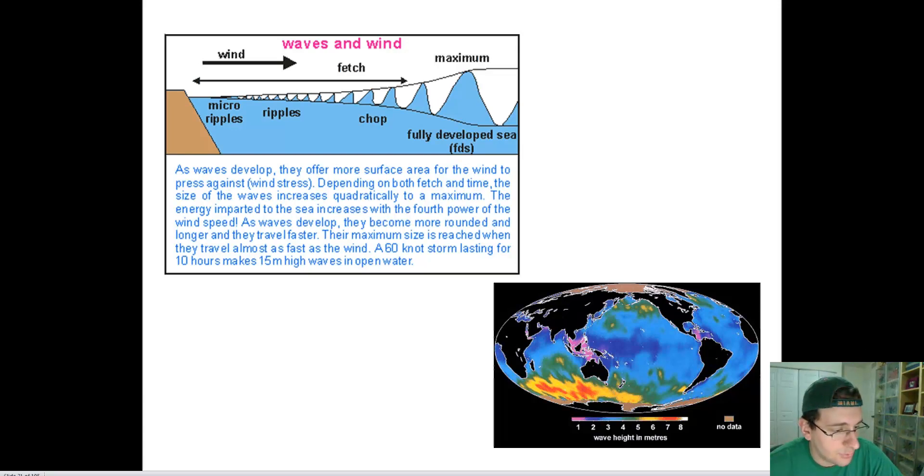In this graph where you see actually how high the waves are getting in the oceans, you can see that there's a lot of concentrated waves in the southern part of the world where it's unobstructed by continents.